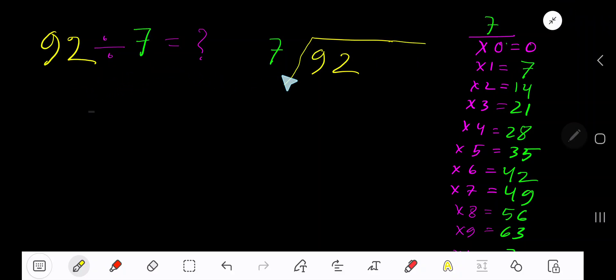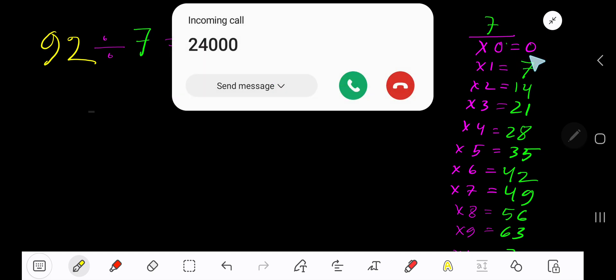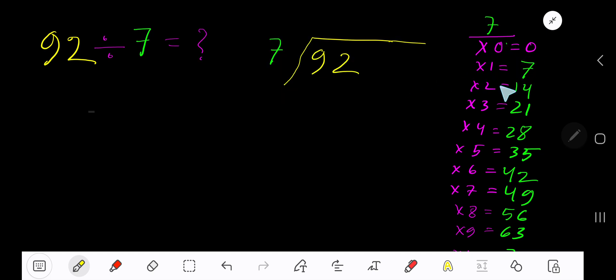92 divided by 7. Here 7 is a divisor, so we need the multiplication table of 7. 7 times 0 is 0, 7 times 1 is 7, 7 times 2 is 14, 7 times 3 is 21.